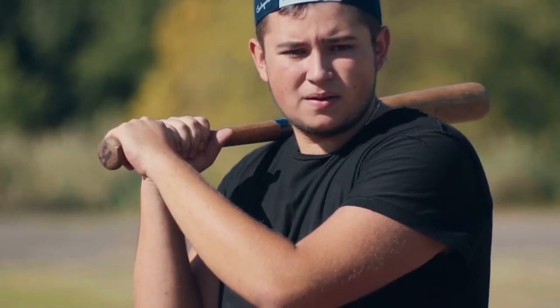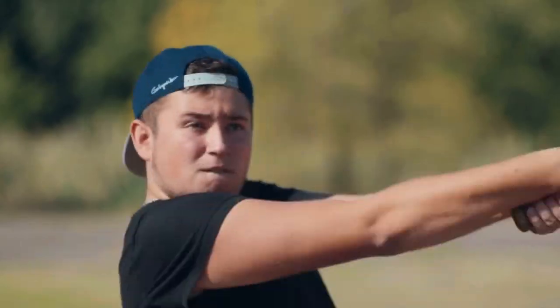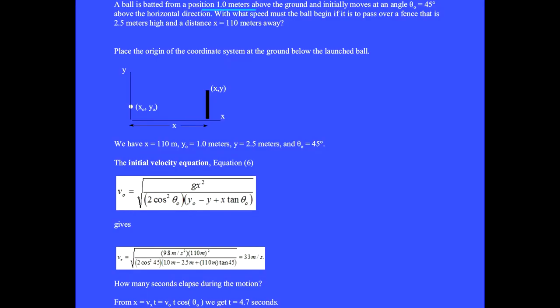In the next example, a baseball is batted from a position 1 meter above the ground and initially moves at a launch angle of 45 degrees. With what speed must the ball begin if it is to pass over a fence that is 2.5 meters high and a distance x equal 110 meters away?